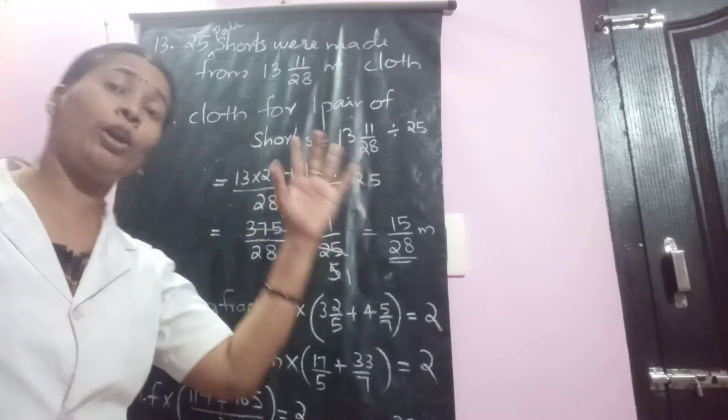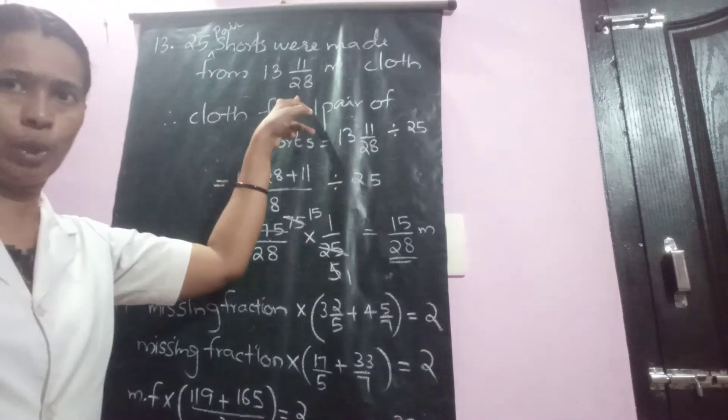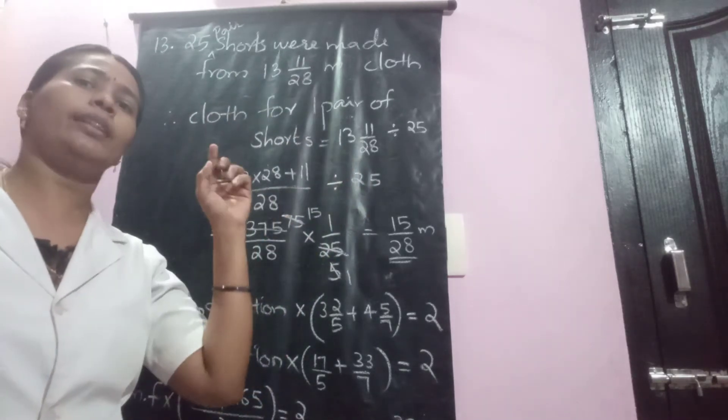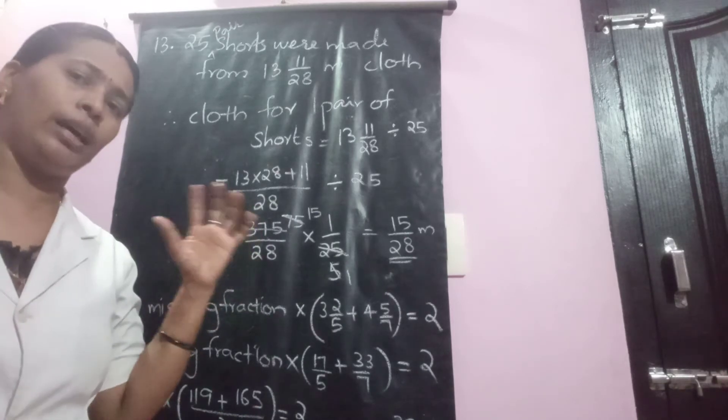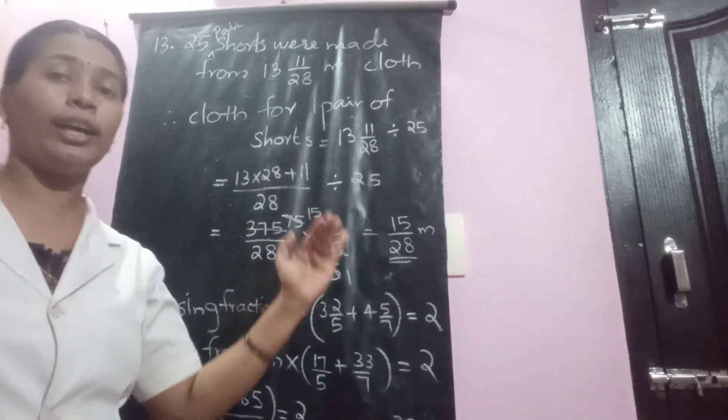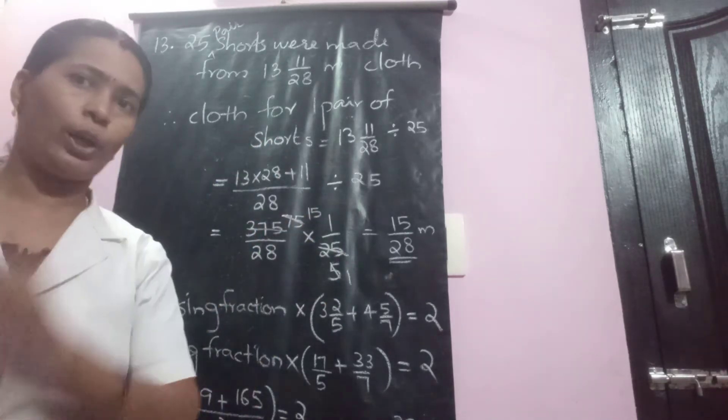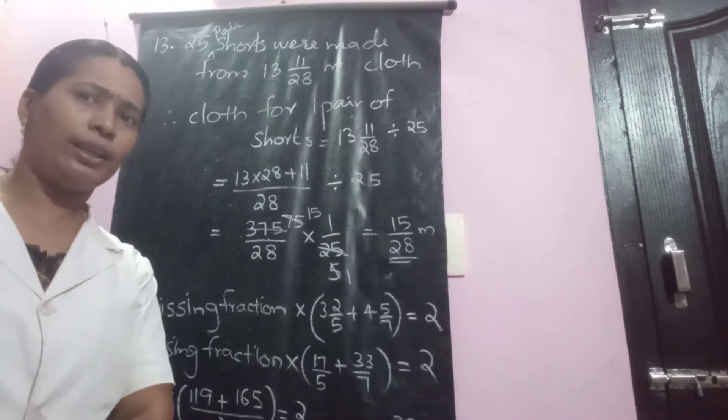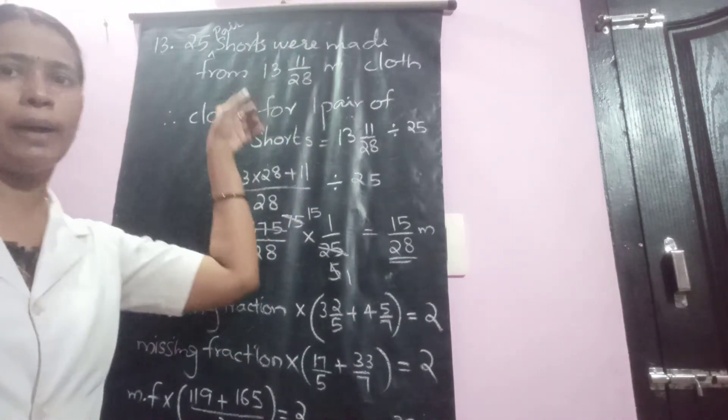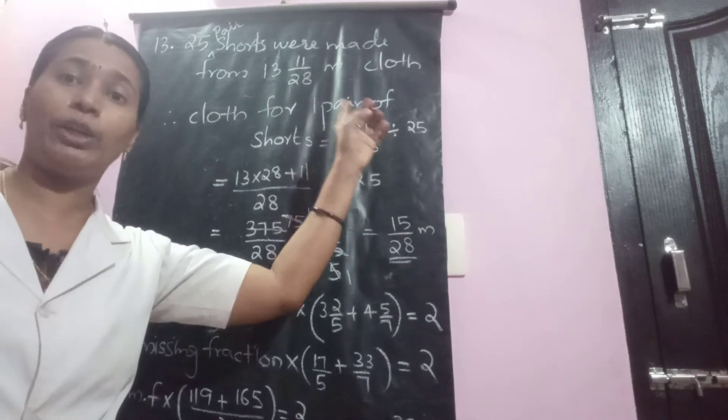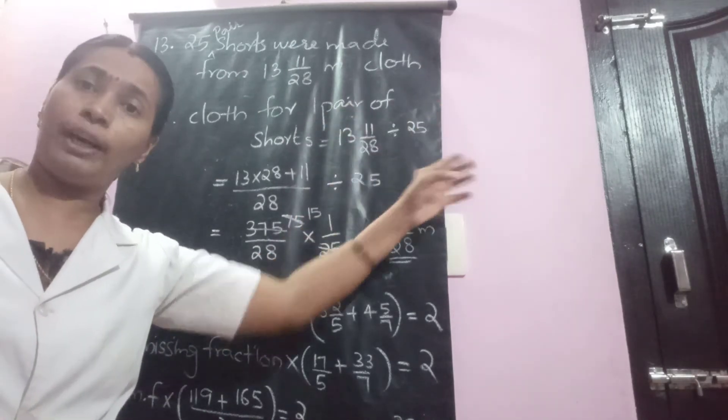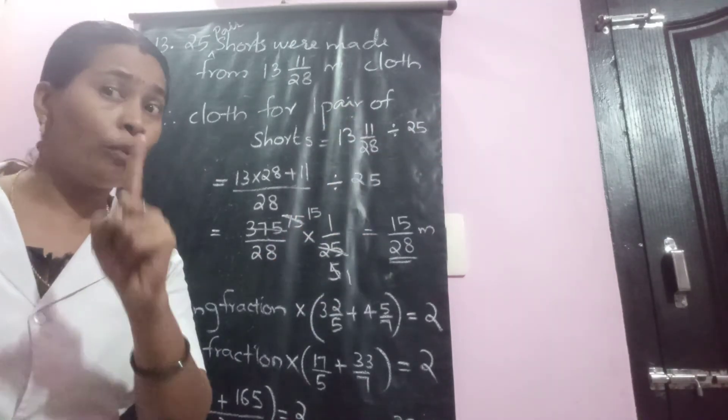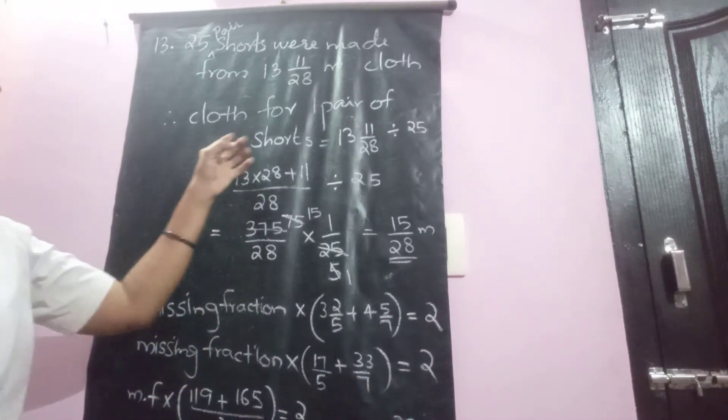25 pairs of shorts need this much meter of clothes. So what will be the length of meter of clothes required for 1 pair of shorts? How do you calculate? That we know already. The total by number. Total length by number will give you the length of 1. That is why these are written.